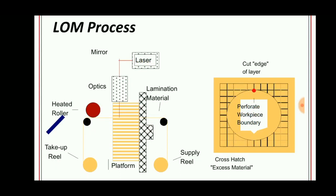Hello viewers, welcome to Engineering Study Materials. Today we are going to discuss laminated object manufacturing, which is one of the types of rapid prototyping or additive manufacturing.